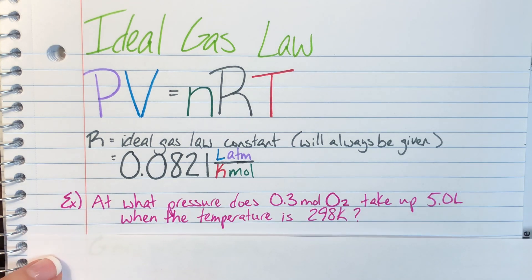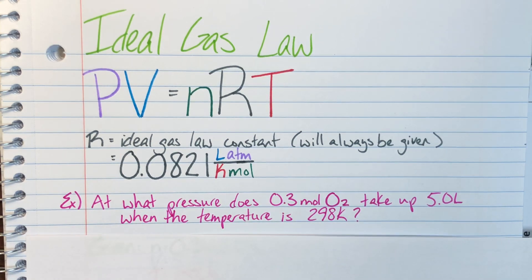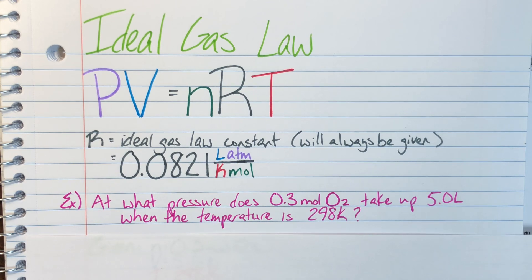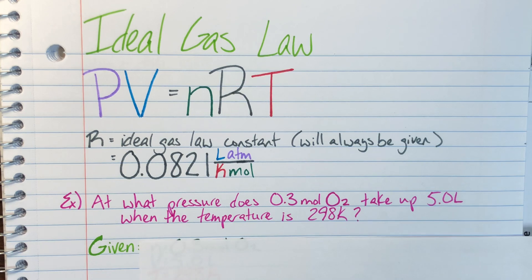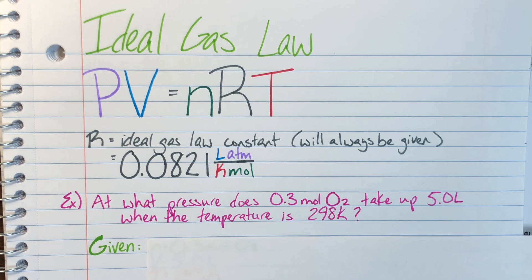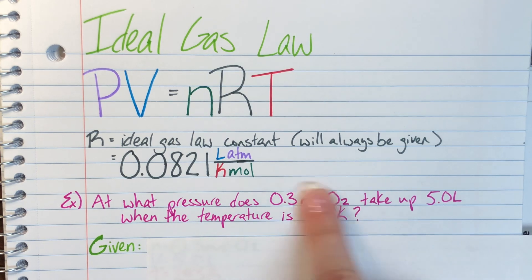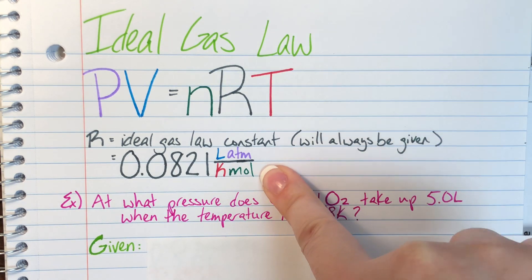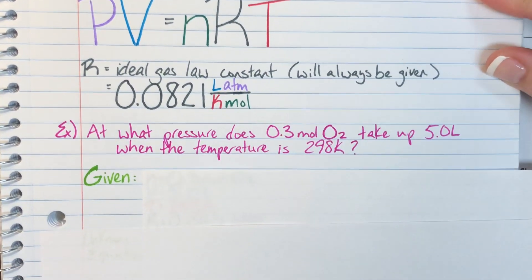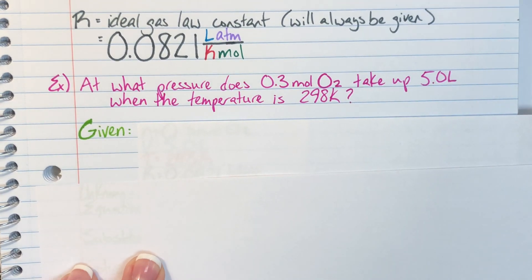The example problem that we are going to be doing for our ideal gas law is: At what pressure does 0.3 moles of oxygen take up 5.0 liters when the temperature is 298 Kelvin? How we are going to do this is following the same steps that you used last year in physics, utilizing the GUESS method. We are going to start off with our givens.